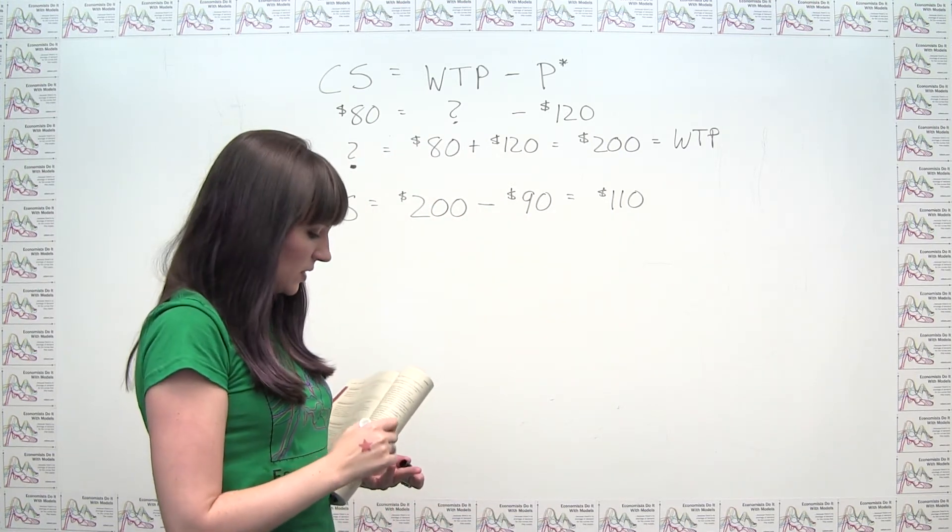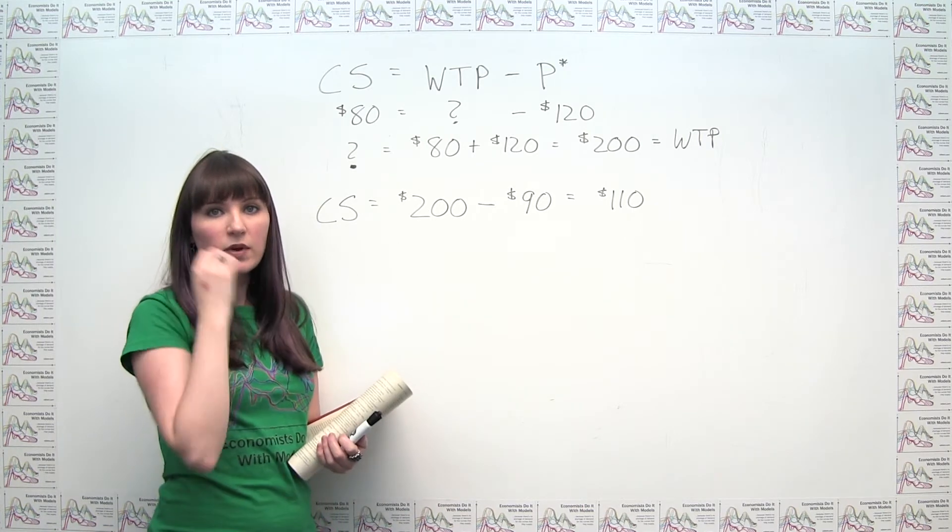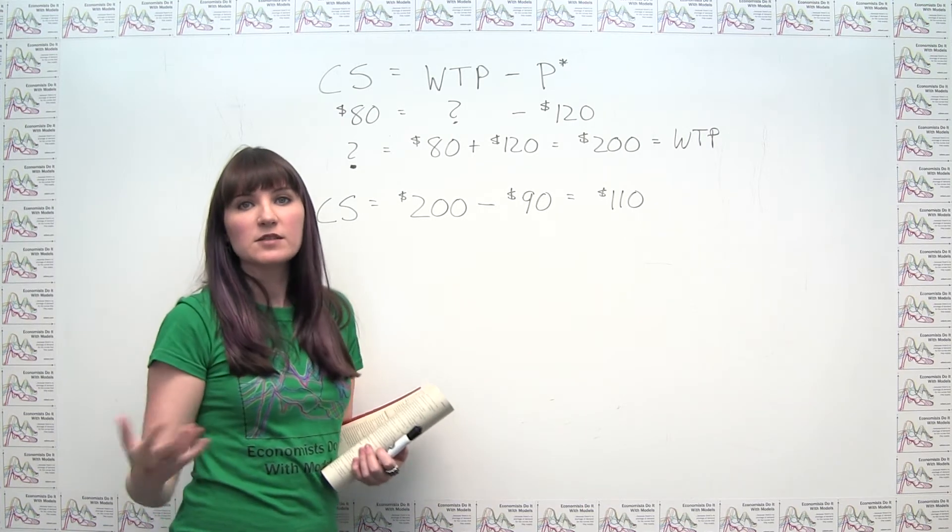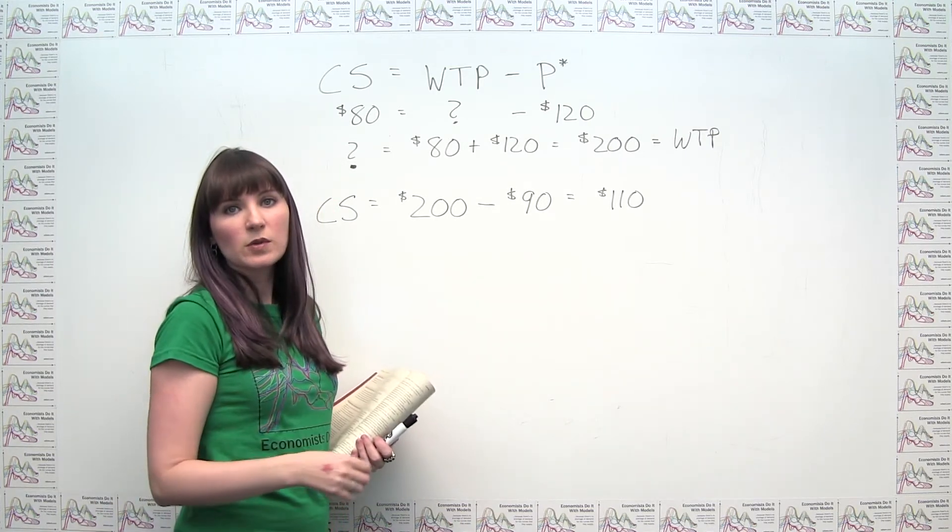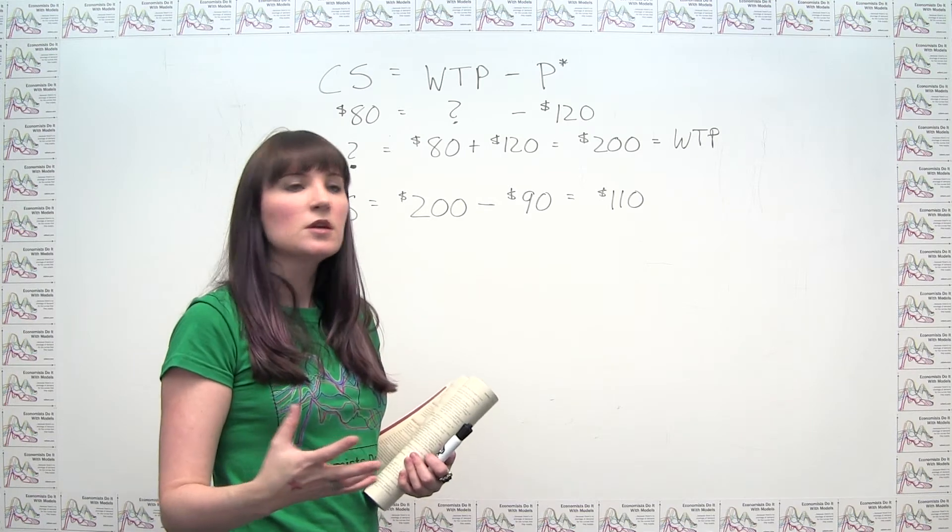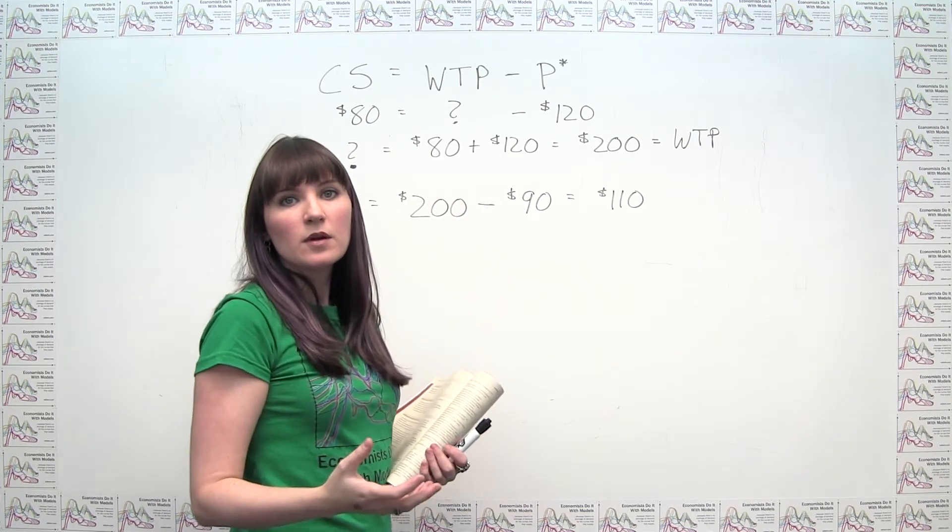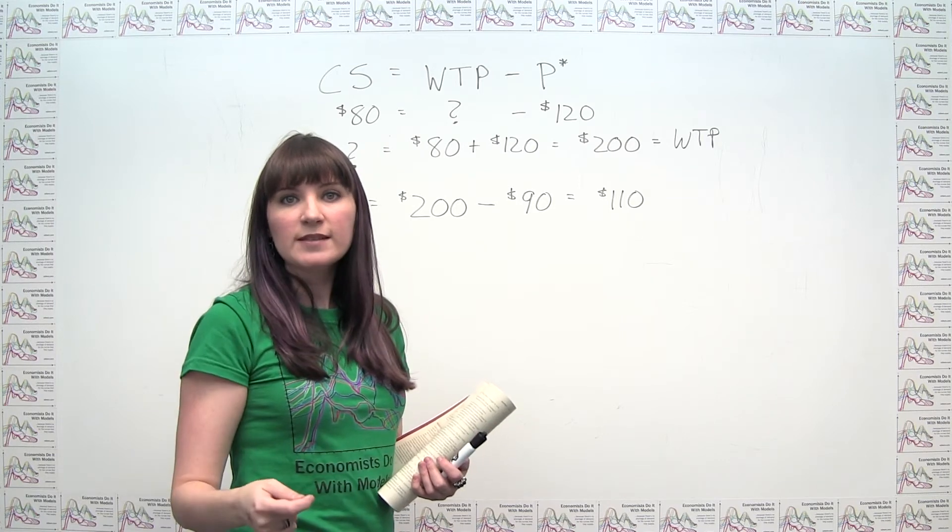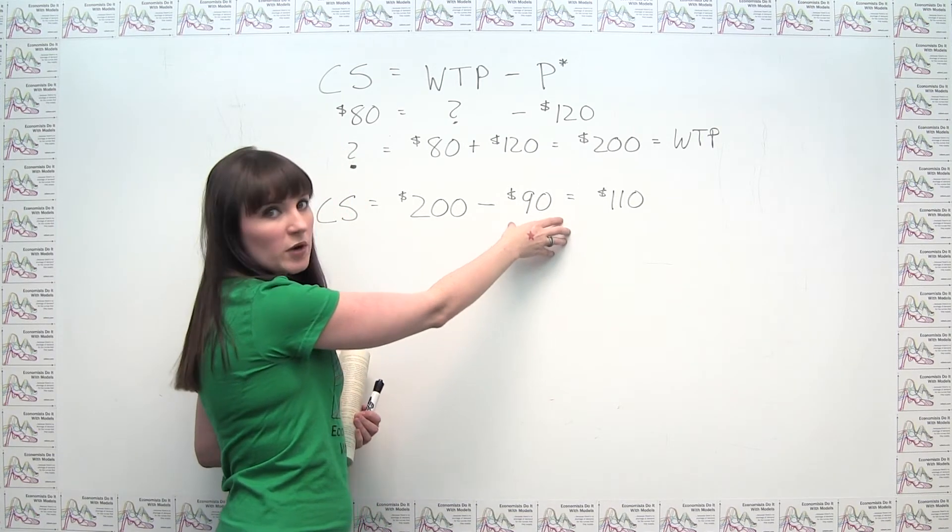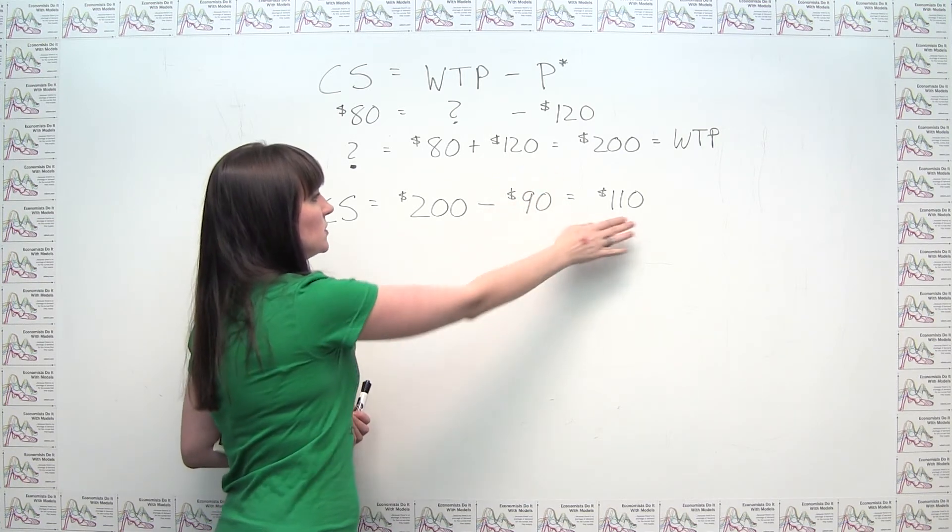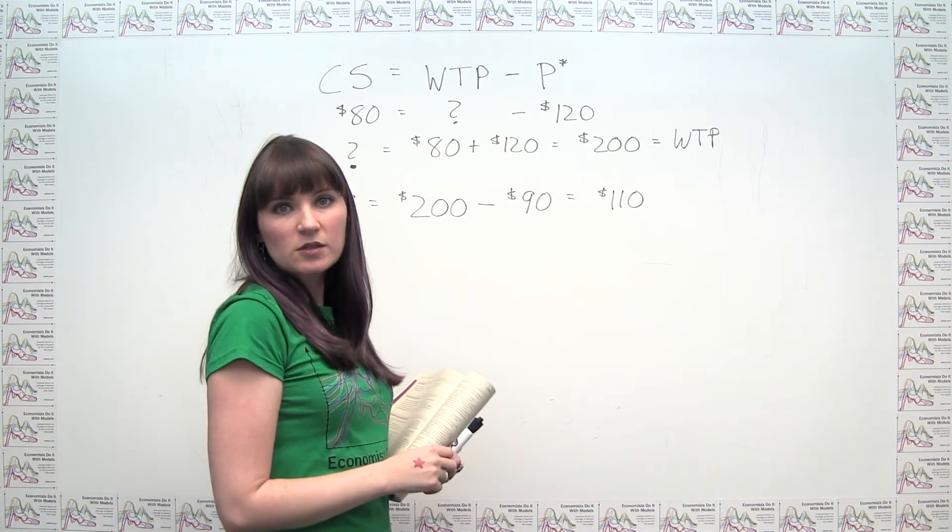And this is consistent with the observation that consumer surplus goes up when prices go down and vice versa. Not surprisingly, because if we're assuming that the consumer is economically rational, they're not forming their personal valuation of the item based on how much they know the market price is. So this valuation isn't going to change based on what this price is. So obviously as this goes down, consumer surplus goes up. And as this goes up, consumer surplus goes down.